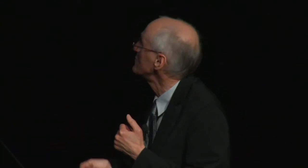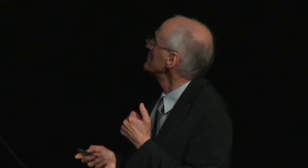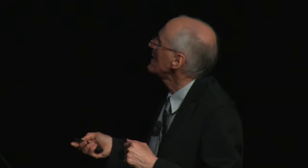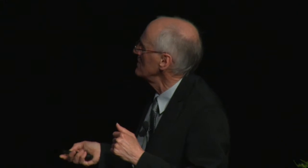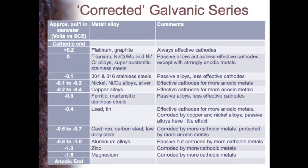Moving on to the final factors, we can produce a corrected galvanic series taking all these factors into account. We start with platinum and graphite — always cathodes, very positive. Then titanium and various nickel-chromium alloys around about 0.0 volts. Passive alloys are less effective cathodes, only really a problem with strongly anodic metals.